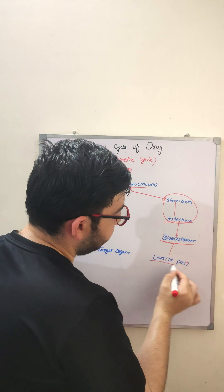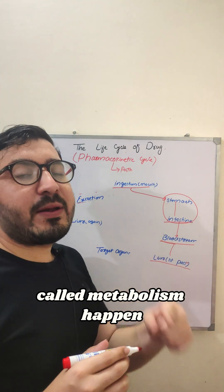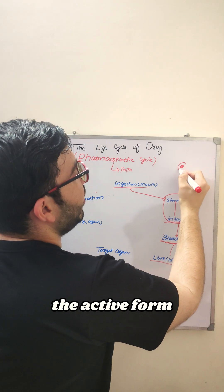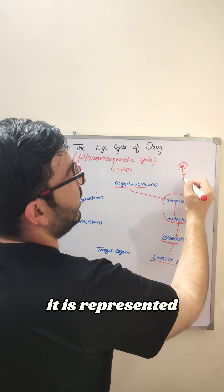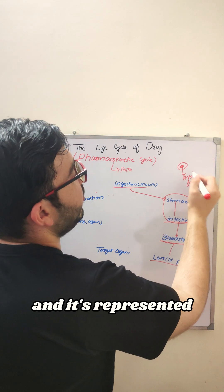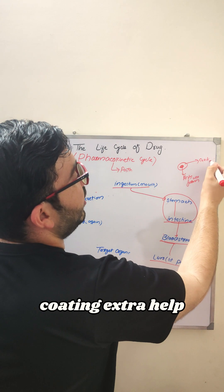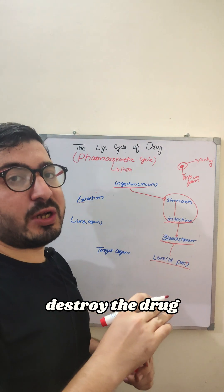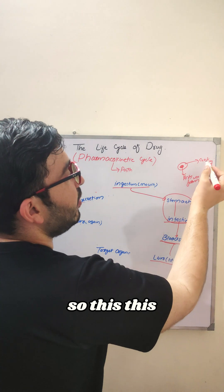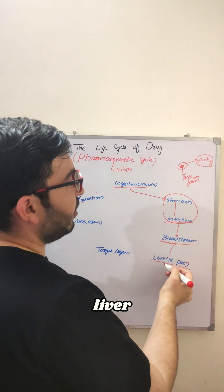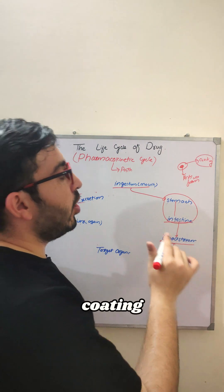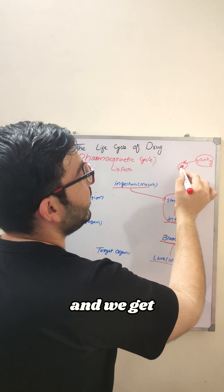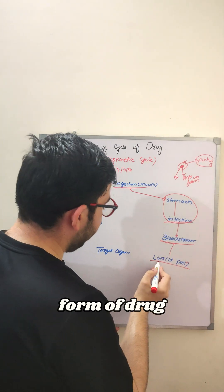The drug then goes to the liver, where a process called metabolism takes place. Remember, when we take a drug it is in its active form, but it has a coating. This coating helps prevent it from enzyme activity, because enzymes would destroy the drug. So we use coating for protection. When the drug reaches the liver, this coating is removed — the liver does this job — and we get the active form of the drug.